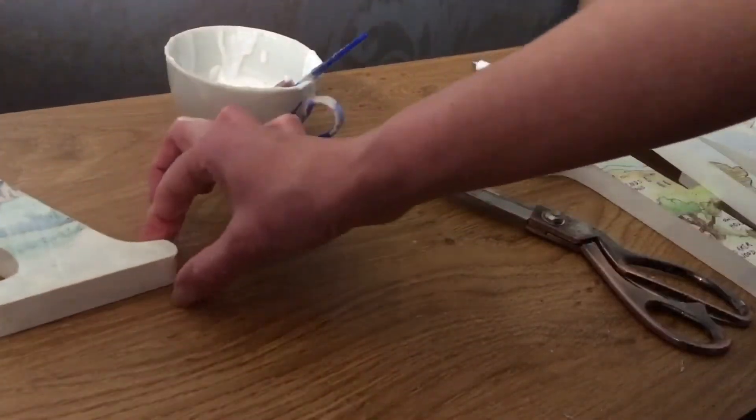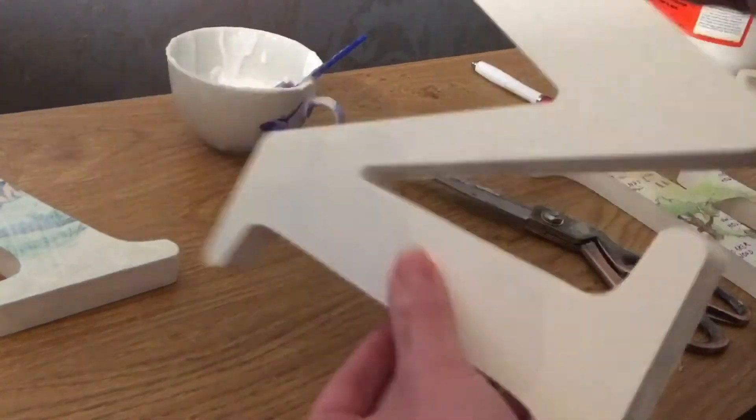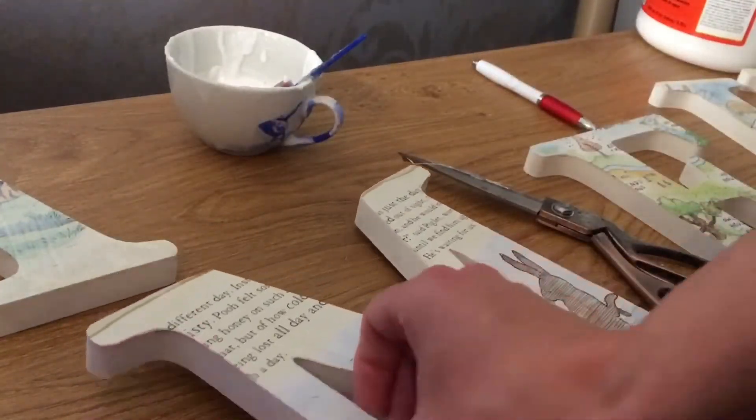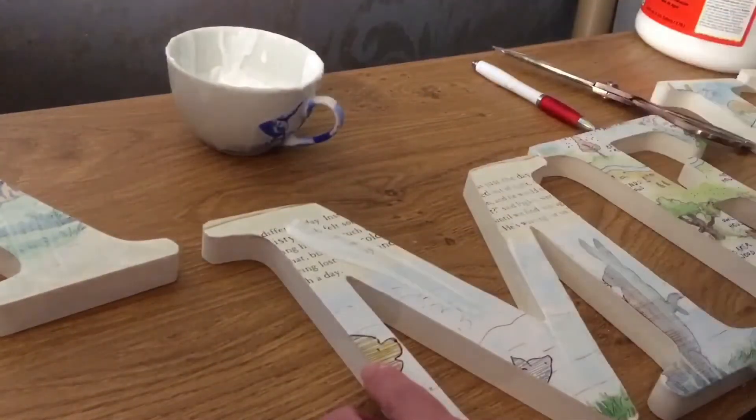So once it's done, move on to the other letters and do the same for each one. Trim it if it needs trimming, and then apply the gloss.